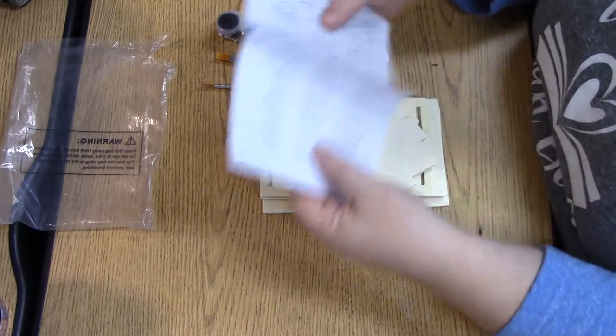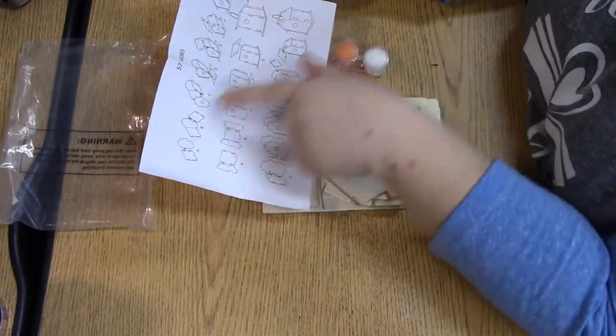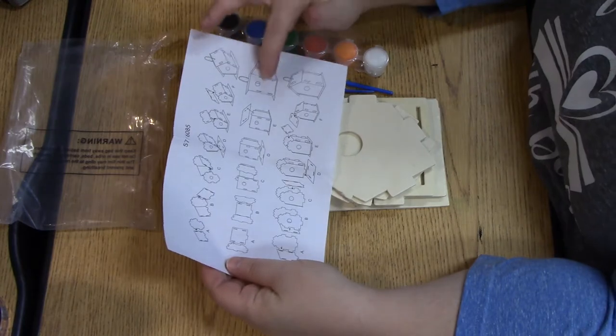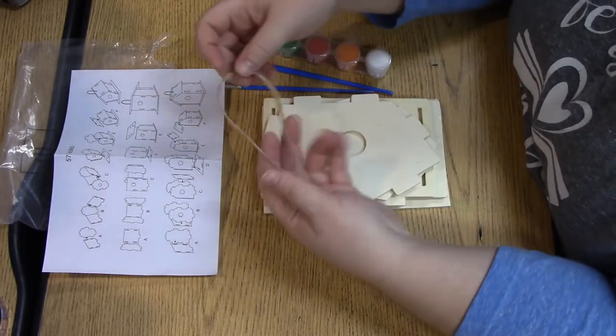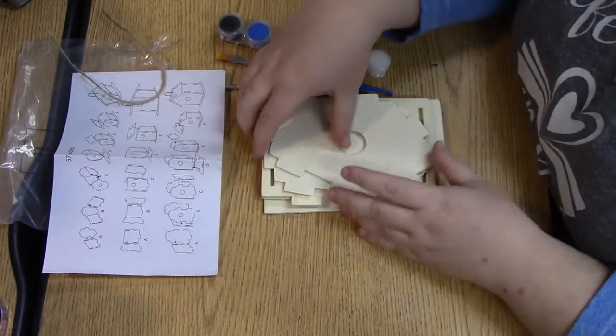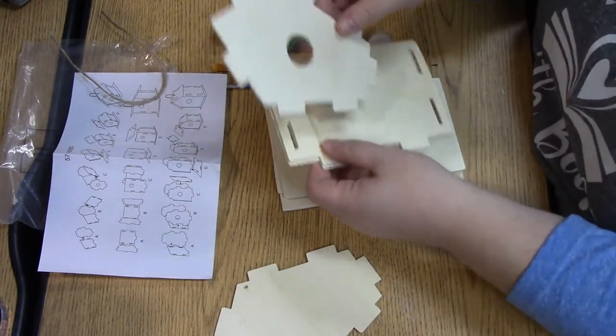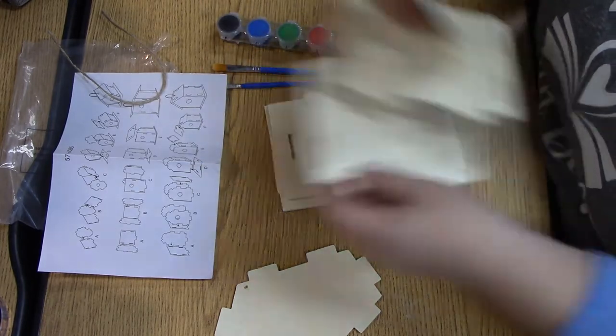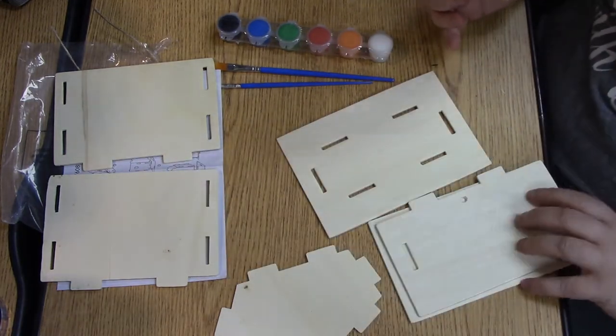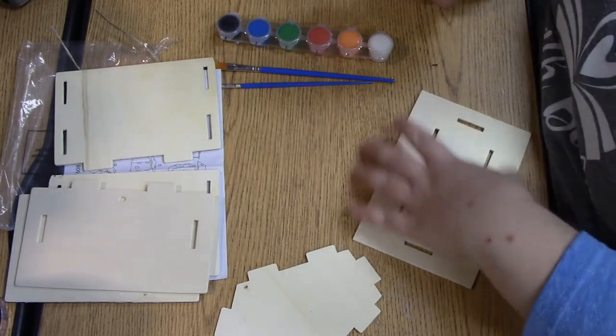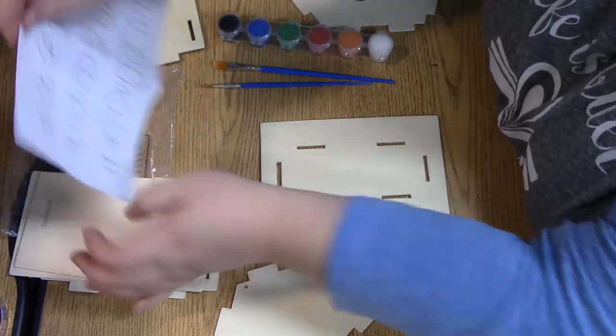So each of these has instructions. There are three different styles of birdhouses, and each of these papers shows you how to put each one together. In here you're going to have a little piece of string so that you can tie this off later. So this looks like a front and a back and then we have four walls and then a bottom. I believe this is going to be the top and I think this one is the bottom. Now these ones are basically put together with a tongue and groove system.